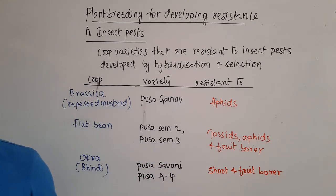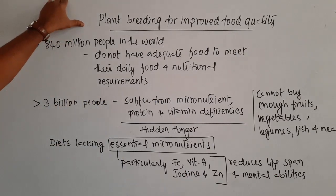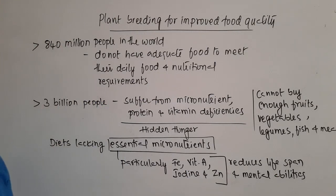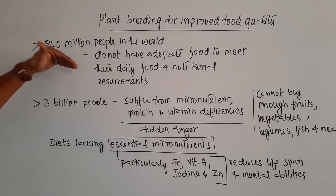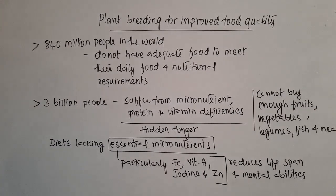That covers the plants developed to resist insect pests. Next, we shall look at plant breeding for improved food quality. Plant breeding techniques are also used to improve the quality of food. More than 840 million people in the world are not able to get adequate food to meet their daily food and nutritional requirements, including the required number of calories, nutrients, and vitamins.